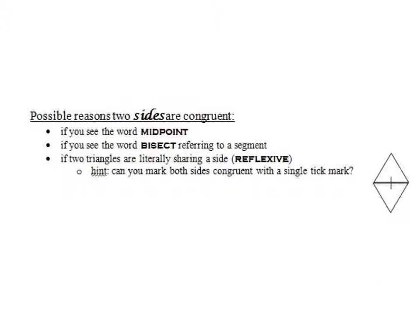Things you should look for to show that a couple of sides are congruent: if you see the word midpoint in the given for the proof, that's going to tell you most likely that two sides are congruent. If you see the word bisect referring to a segment — if a segment is being bisected — that's another tip that you're probably going to be able to show two sides are congruent.